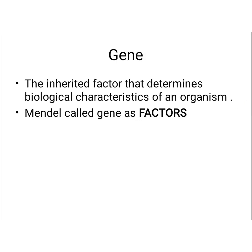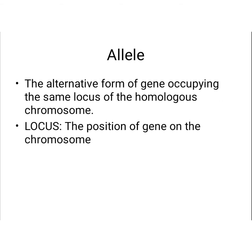First, what is a gene? We all know it is a hereditary material — the inherited factor that determines biological characteristics of an organism. Mendel called genes as 'factors' because he didn't know the name at that time. What is an allele? It is the alternate expression of a gene — the alternative form of a gene occupying the same locus of the homologous chromosome. Locus is the position of a gene in the chromosome.